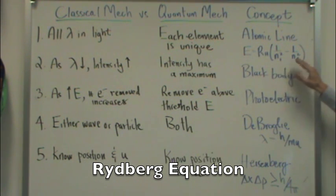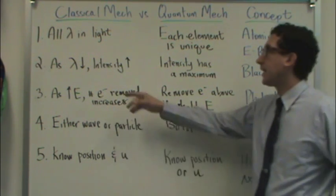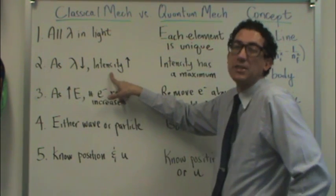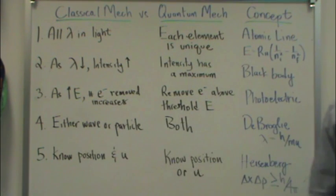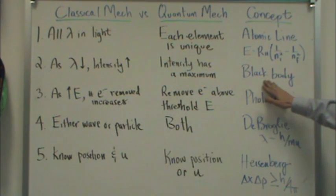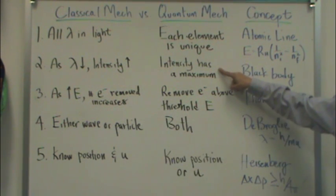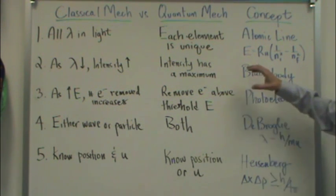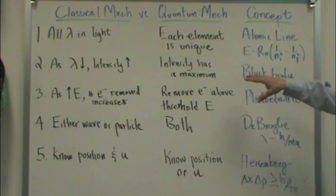The second idea is that as wavelength decreases, classically we assume that we can reach any intensity possible. Really, it doesn't matter. The intensity can increase indefinitely. And when some experiments were done on what's called black body radiation, what we discovered is that intensity actually has a maximum. We can't reach any intensity possible. There's a discontinuity or discontinuous nature to reality that we didn't realize before.